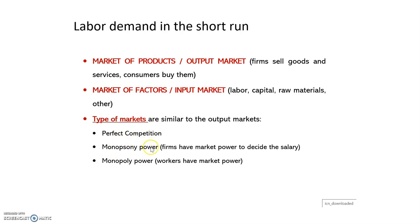If we have monopsonic power — which in the market of products means only one consumer has the power — here the demand comes from the firm side. So monopsonic power means the firm has market power to decide the salary, meaning there is only one firm offering this type of work. If we have monopoly power, it means workers have the market power — very few or only one worker who can negotiate the salary. The salary is the price in the labor market.